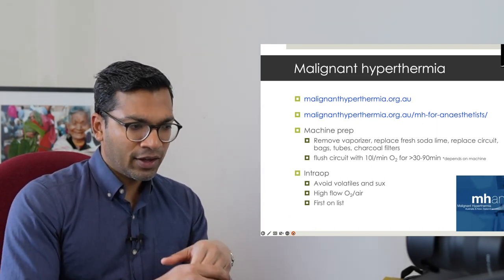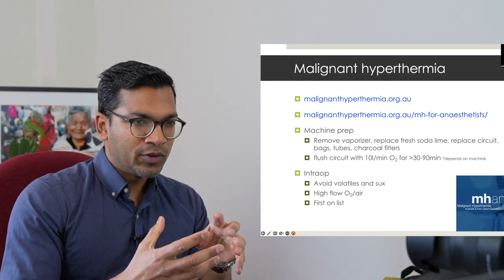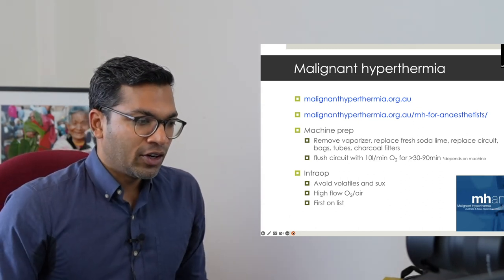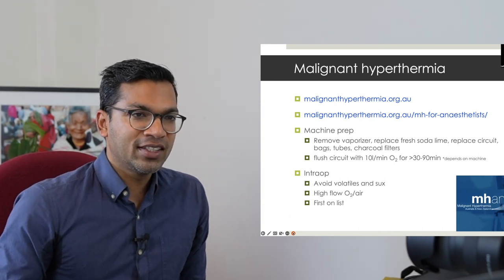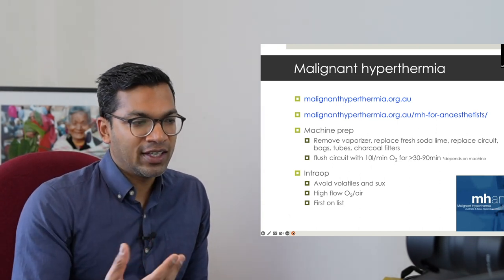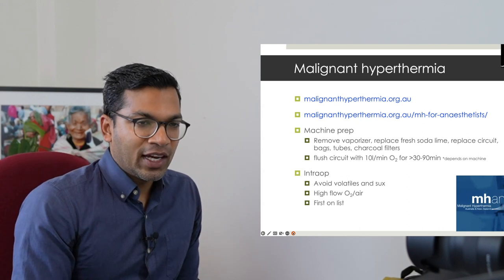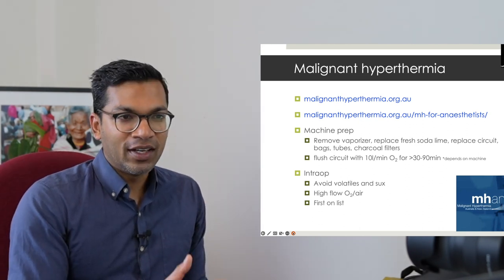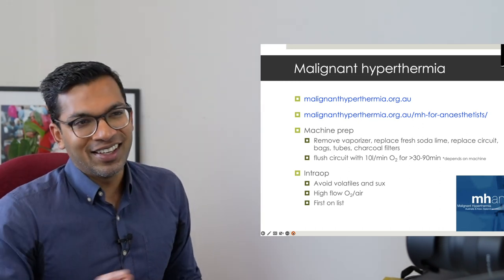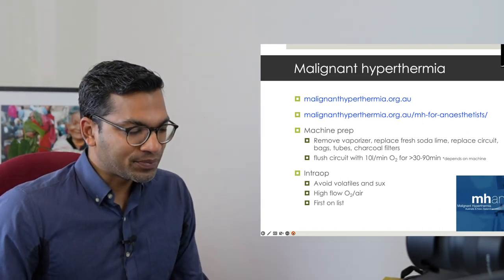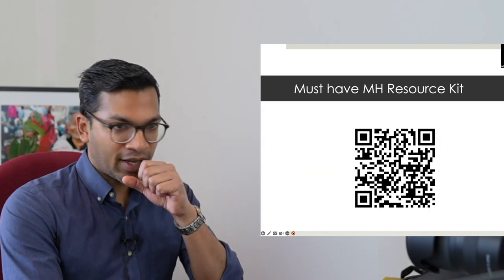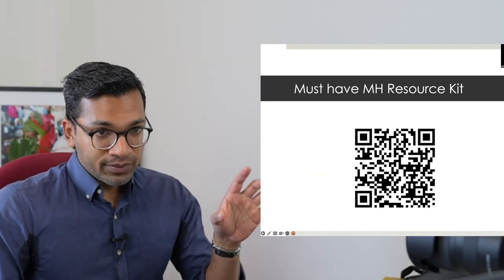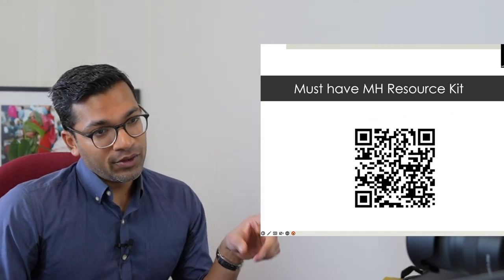To prepare the theatre for an MH-susceptible patient: flush the circuit at 15 L/min for 30–90+ minutes (depending on machine complexity), remove the vaporizer, replace the soda lime canister and circuit with fresh ones, and add charcoal filters. Schedule the patient first on the list. Intraoperatively: avoid volatiles and sux; use propofol TIVA and any non-depolarising muscle relaxant. Run higher oxygen flow to prevent residual volatile build-up. Know where the dantrolene and MH resource kit are.